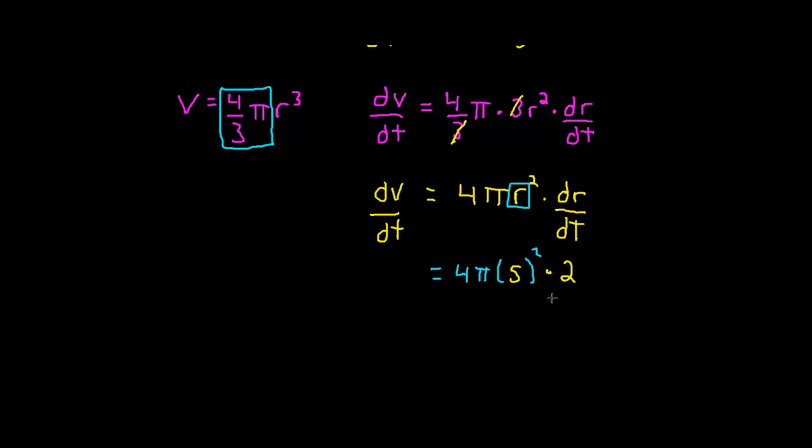The very last thing to do is just to crunch all of these numbers. And we can get this in terms of π. This is 25. 25 times 2 is 50. And 50 times 4 is 200. So 200π.